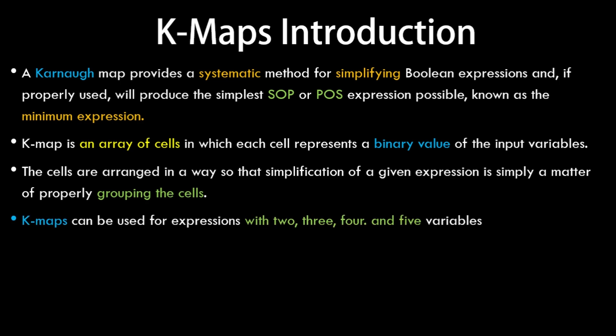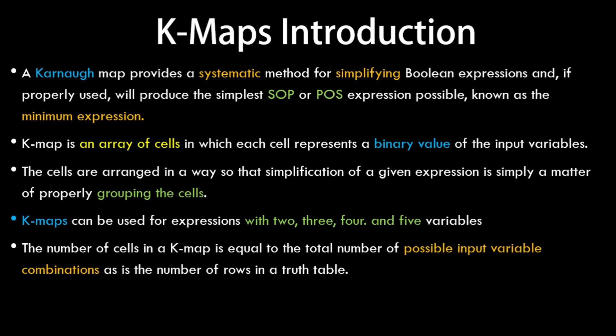K-maps can be used with 2, 3, 4, and 5 variables. Beyond that we have different techniques. The number of cells in a K-map is equal to the total number of possible input variable combinations. If there are 3 variables, the number of cells would be 2 raised to 3, that is 8.